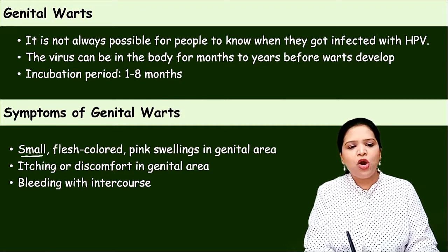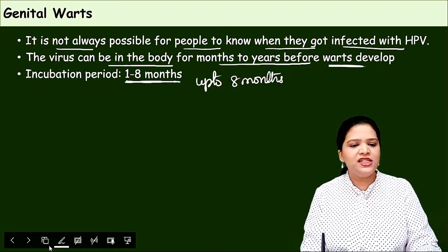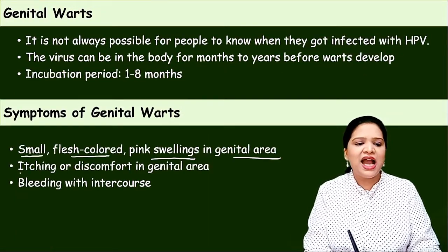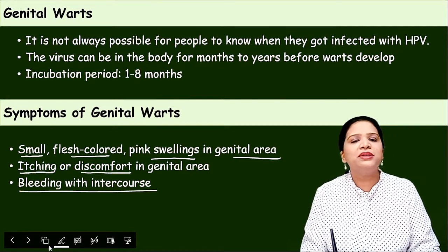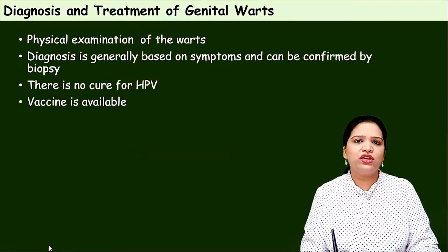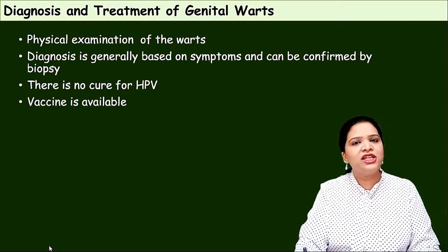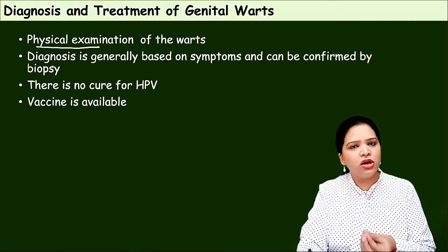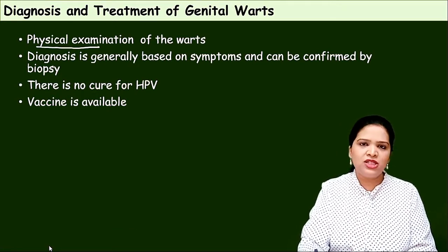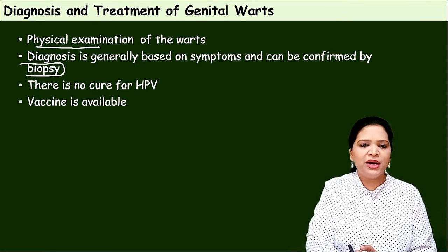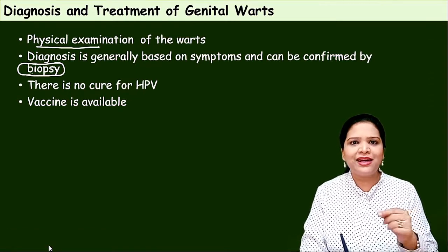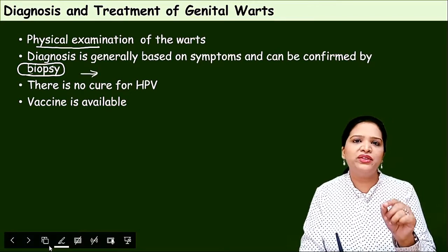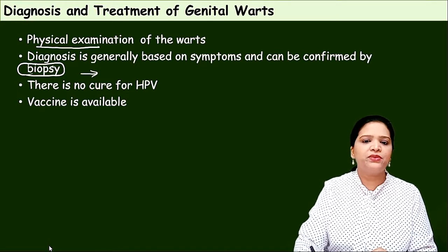Symptoms of genital warts include small flesh-colored pink swelling in the genital region. If unnoticed, it later becomes a cauliflower-like appearance, with itching or discomfort in the genitalia and sometimes bleeding during sexual intercourse. Diagnosis is initially based on physical examination — the doctor identifies genital warts by looking at the appearance. To confirm, a biopsy is done: the skin from the wart region is scraped using a small blade and the tissue and surrounding viral structures are examined.